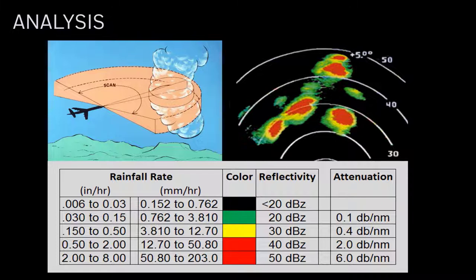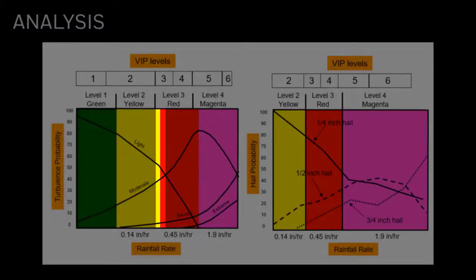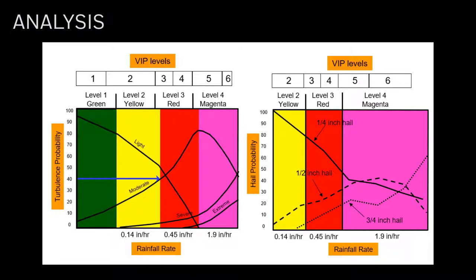For analysis, we manipulate the tilt control and observe the colors on the display. Based on studies, higher reflectivity correlates with higher probabilities of turbulence and hail. Entering the turbulence probability chart at the beginning of red gives about a 40% chance of moderate turbulence and a 5% chance of severe turbulence. These are probabilities, however, and the relationship between reflectivity and turbulence is not as direct as we would like. Also, the chart only applies to convective weather, so we must first determine if we are dealing with convective or stratiform weather.